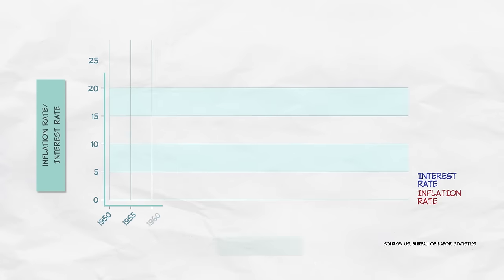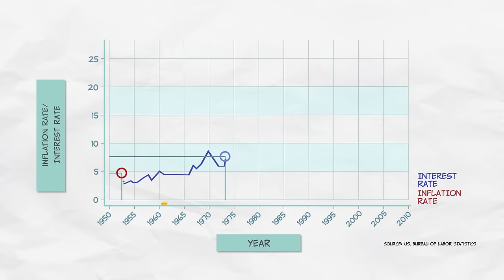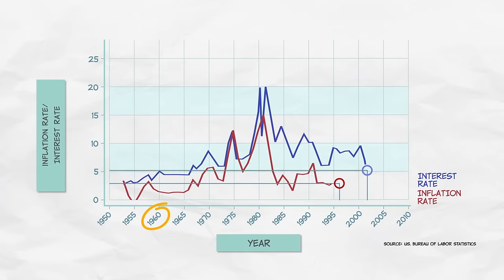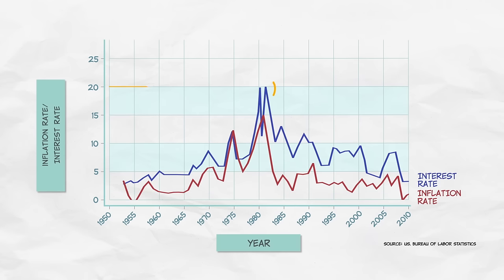This is called the Fisher Effect, after the great American economist Irving Fisher. You can see the Fisher Effect in this data from the United States. Notice, for example, how interest rates and inflation rates were low in the 1960s. But as inflation increased, so did interest rates. Interest rates reached a peak of almost 20% when inflation hit 15% per year. Since that time, inflation has fallen, and so have interest rates.